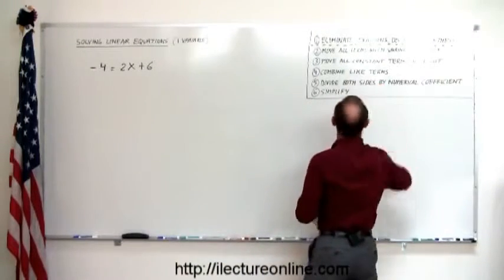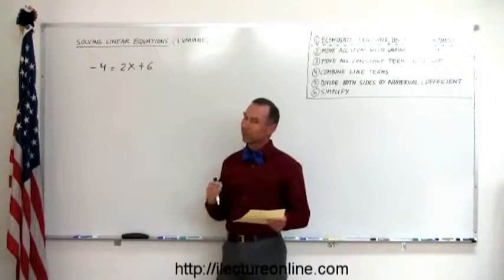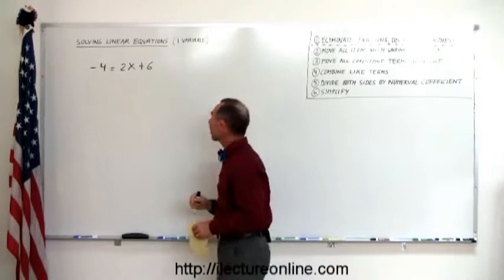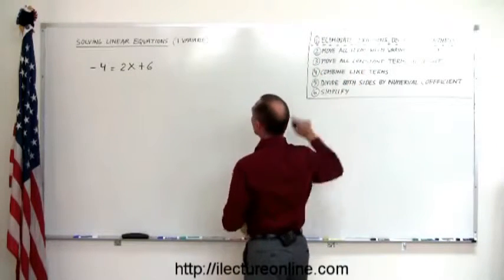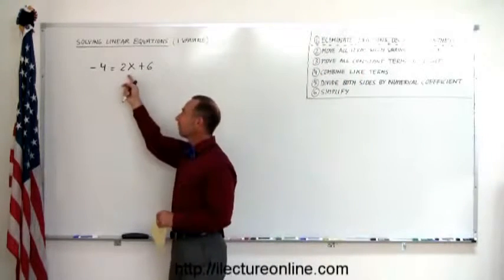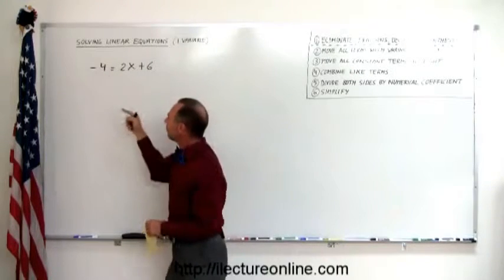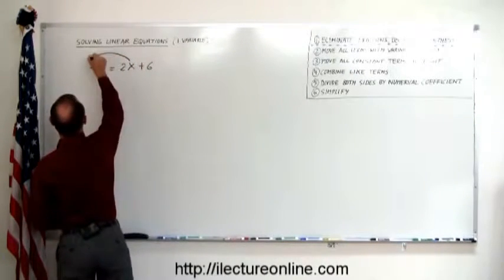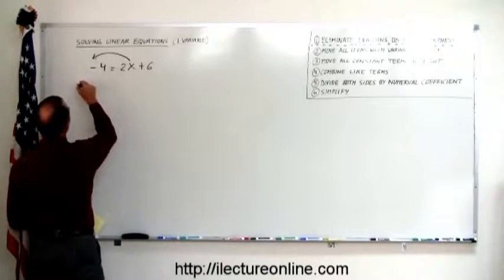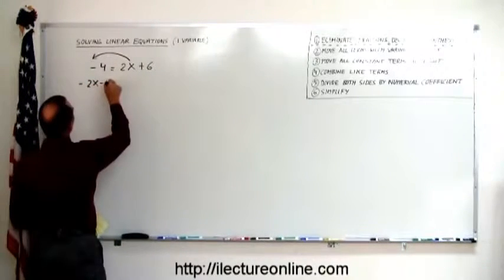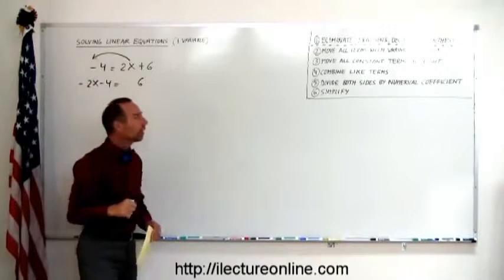First, we ask ourselves: are there any fractions, decimals, or parentheses? The answer is no, because this is a simple example. The next step says move all the terms with the variable to the left. I have a 2x written on the right side of the equal sign, so I move that to the left. When I move it, the sign changes, so this becomes minus 2x minus 4 equals 6. Notice the 2x is now gone from the right side.